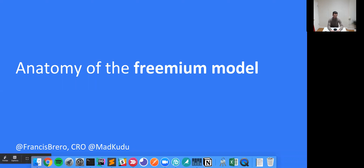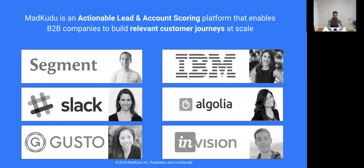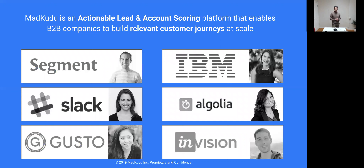Some quick elements about MadKudu: we are a lead scoring and account scoring platform where the idea is to leverage all of the data that's available about your customers to create and orchestrate relevant customer journeys at scale. Along the way, we've been fortunate to work with some amazing companies, ranging from unicorns like Slack and InVision, to established companies showing amazing growth like IBM, and new kids on the block like Algolia, Segment, and Gusto, all showing really fast scale.